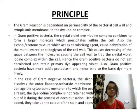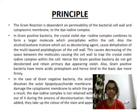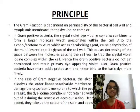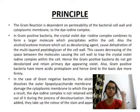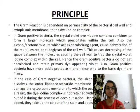The Gram reaction is dependent on permeability of the bacterial cell wall and cytoplasmic membrane to the diiodine complex. In Gram positive bacteria, the crystal violet diiodine complex combines to form a larger molecule which precipitates within the cells. So they appear in violet color.